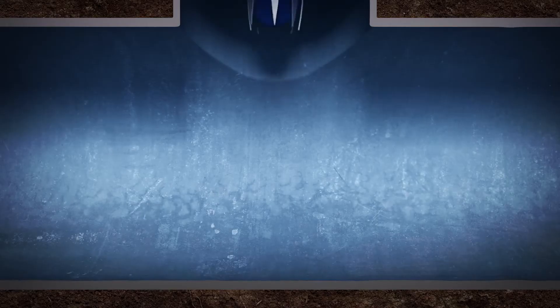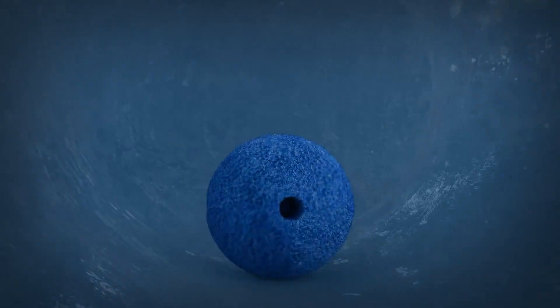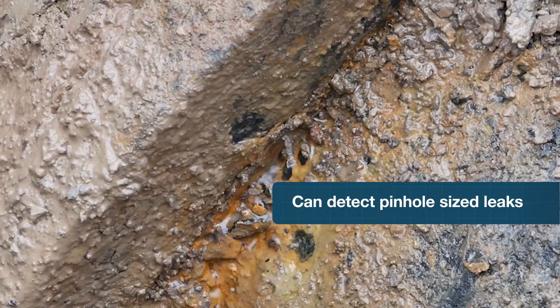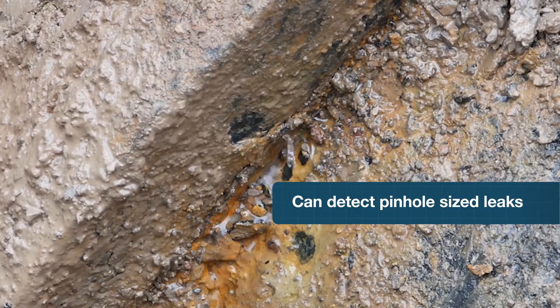On the non-revenue water side, because we are taking the acoustic sensor directly to the leak, we can inspect transmission mains with a greater level of accuracy than traditional correlators.